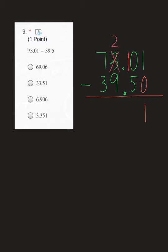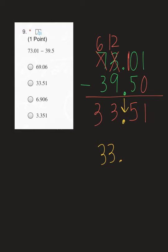Next, 0 minus 5 — I can't do that, so I need to borrow from my 3, making it a 2, and my 0 becomes a 10. 10 minus 5 is 5. Next, 2 minus 9 — I can't do that, so I need to borrow from my 7, making it a 6, and 2 becomes 12. 12 minus 9 is 3. 6 minus 3 is 3. Final step: drop your decimal straight down. So your final answer should be 33.51, which on your form should have been letter B.